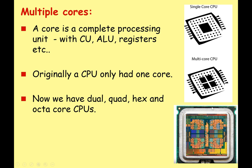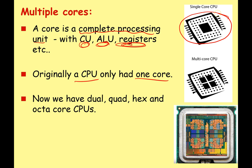Let's take a look at multiple cores. First of all, what do I mean by a core? A core is a complete processing unit — it has its own control unit, its own ALU, and its own registers. Originally, a CPU only had one core with one processing unit, one control unit, one ALU, its own set of registers. But nowadays, certainly in the last 15 years, we have what we call dual, quad, hex, octa-core CPUs. That means you have one chip, one CPU, but it's divided into multiple cores. Here we have a four-core CPU with four processing units on one chip. That's what I mean by multiple cores — one chip, one CPU, with multiple processing units.